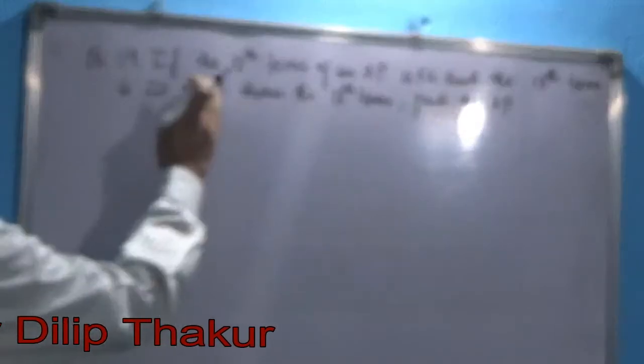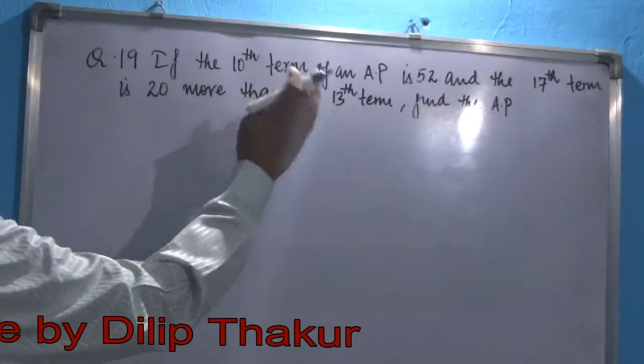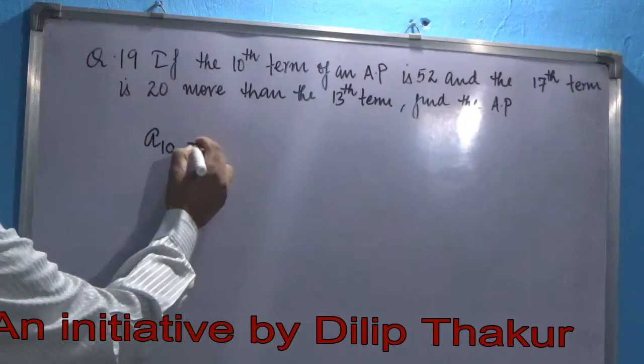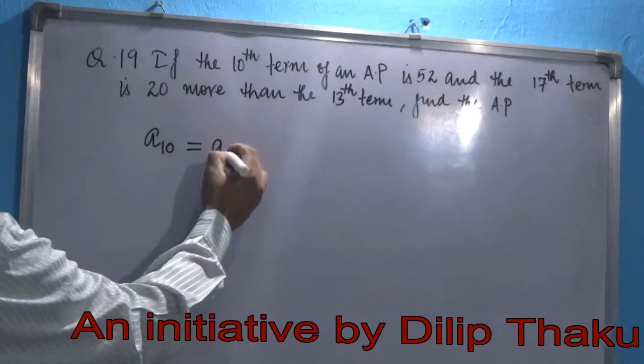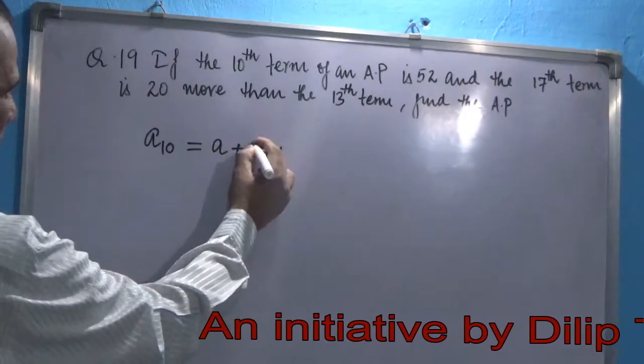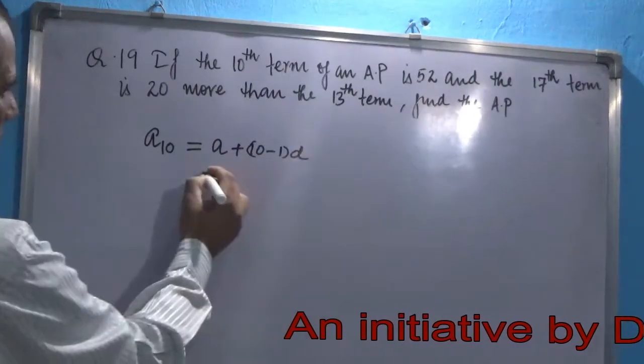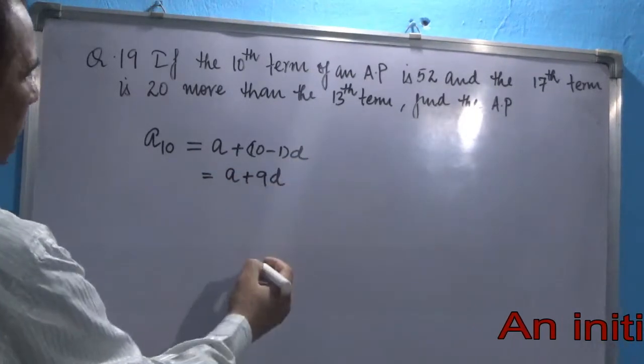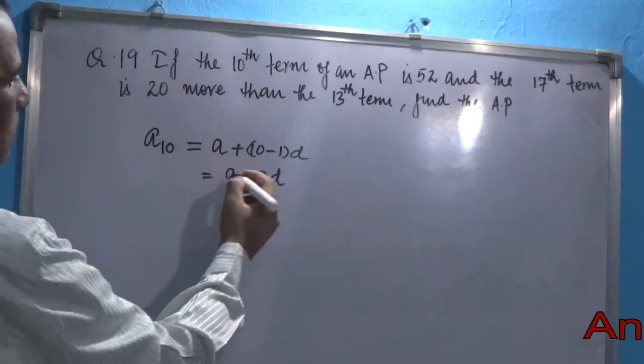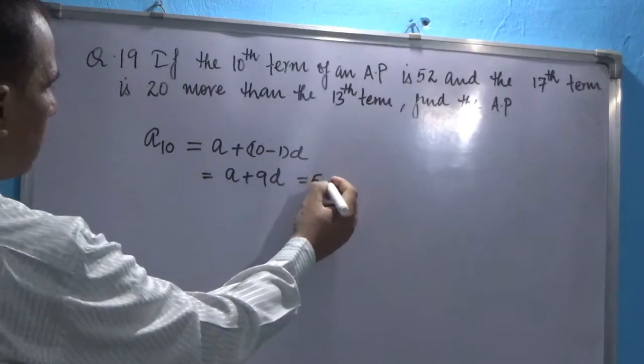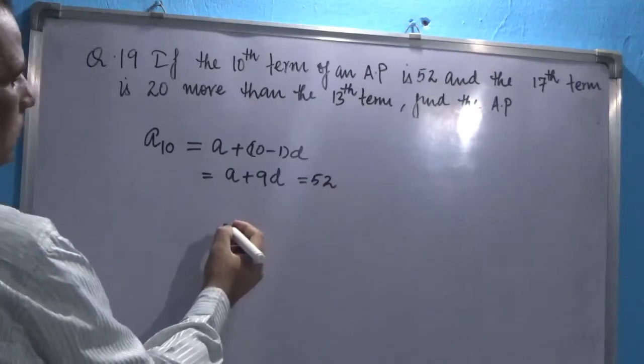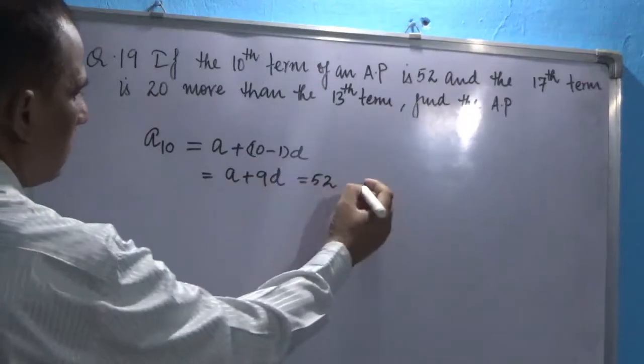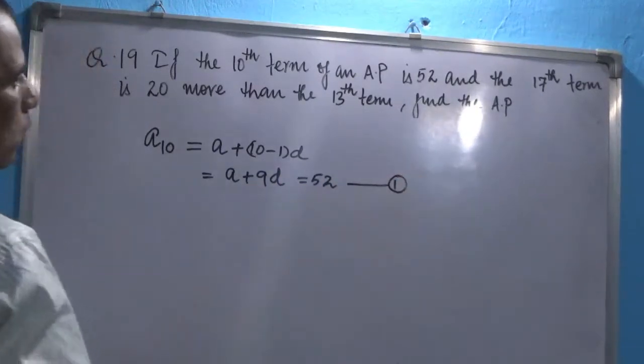Let's take the first condition. The 10th term of an AP is 52, which means A10, that is nothing but A plus 10 minus 1 times D, that is equal to A plus 9D, and that has been given as 52. So we have got one equation of A and D. Let's take it as equation 1.